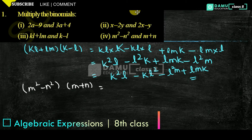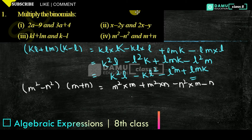First with the first one, as I told, here: m² into m, then plus m² into n, minus n² into m, minus n² into n.